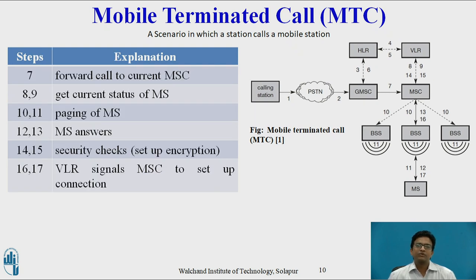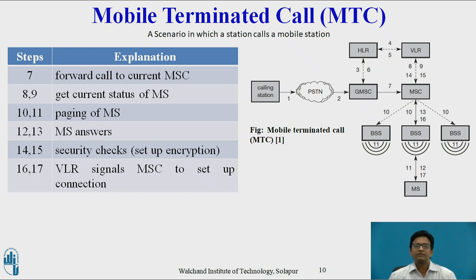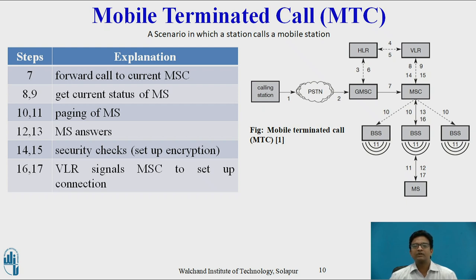In step seven, the call is forwarded to the current MSC. In steps eight and nine, the current status of the MS is retrieved — identifying in which BSS the mobile station is present and identifying the exact cell. In steps ten and eleven, paging of the MS is performed to identify the current location of the MS. In steps twelve and thirteen, the MS is identified to get connected. In steps fourteen and fifteen, a security check and encryption setup are done. In steps sixteen and seventeen, the VLR signals the MSC for connection setup. In this way, connection setup is completed between the calling station and the mobile station.